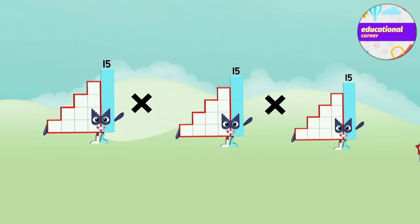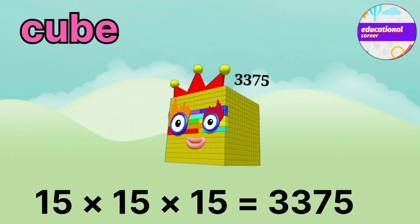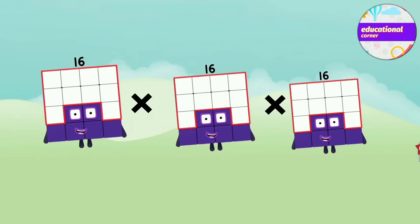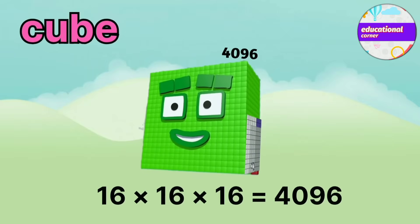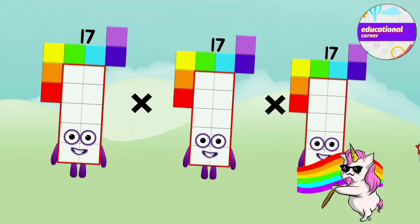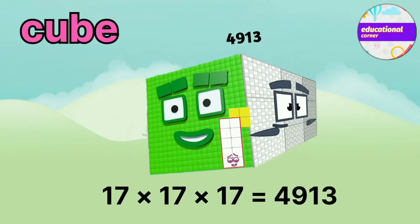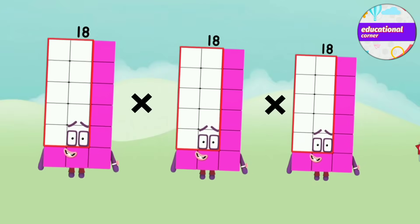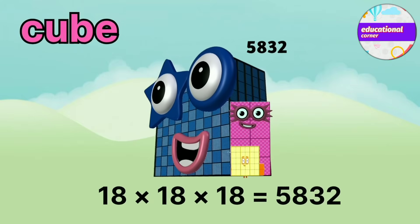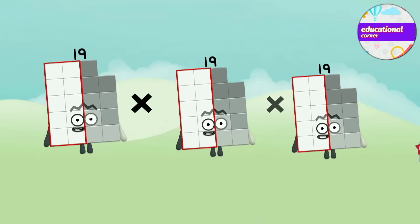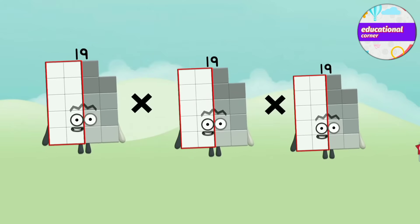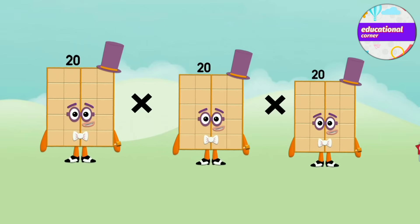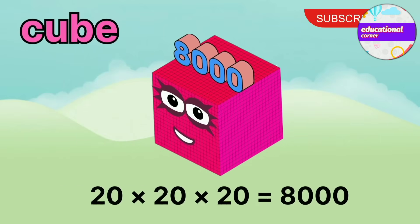15 x 15 x 15 equals 3,375. 16 x 16 x 16 equals 4,096. 17 x 17 x 17 equals 4,913. 18 x 18 x 18 equals 5,832. 20 x 20 x 20 equals 8,000.